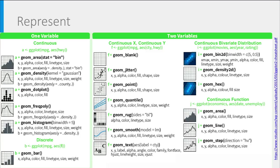For the represent stage, it's a question of how you would like to visualize data using different techniques. Here we show a reference sheet for the ggplot2 library for R. This highlights several techniques that can be used for plotting one variable or two variables, including different examples such as histograms, bar charts, scatter plots, stacked area charts, density charts, and so forth.